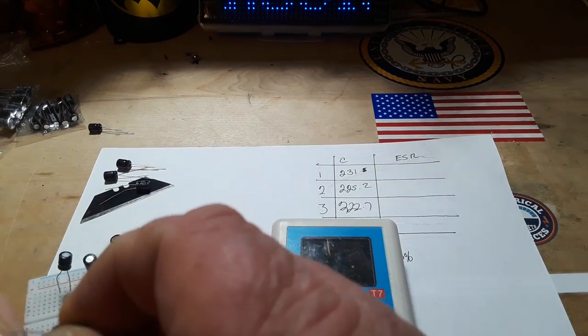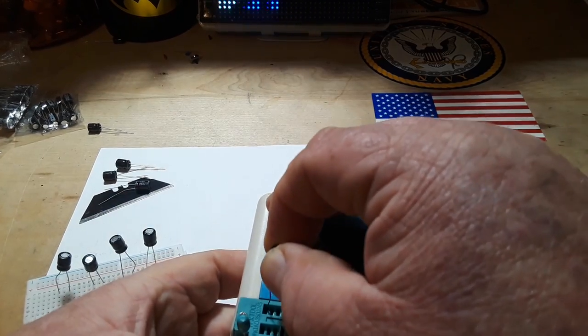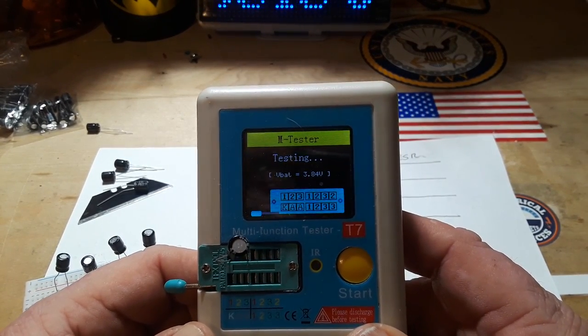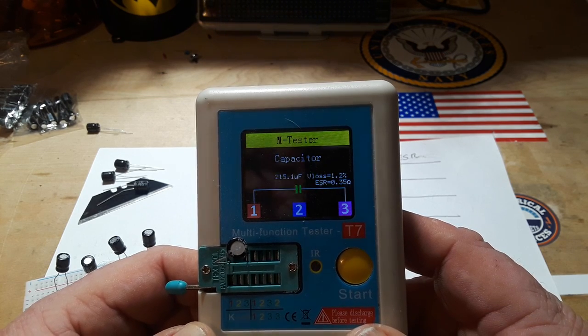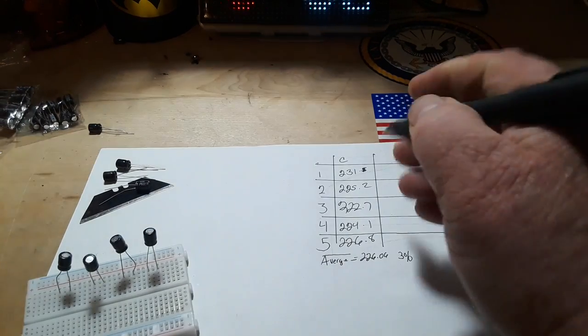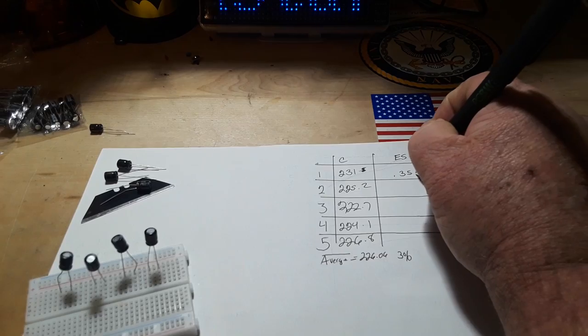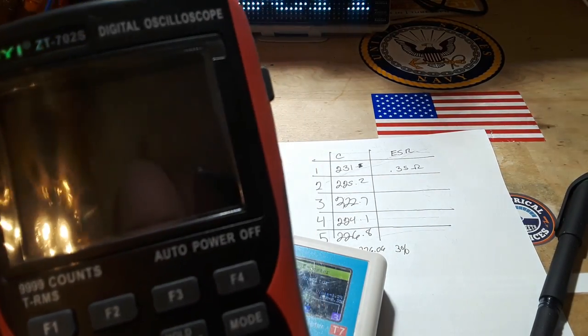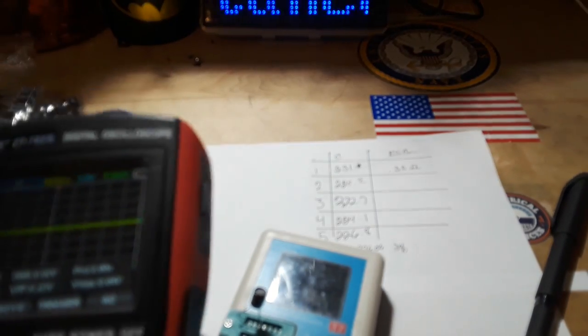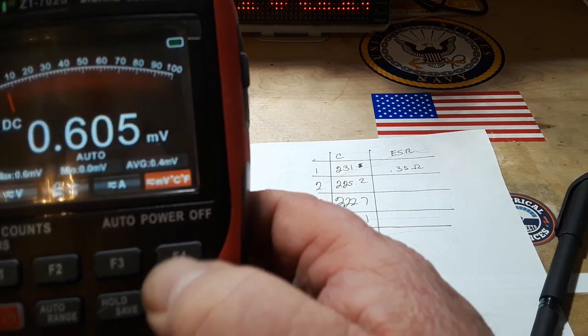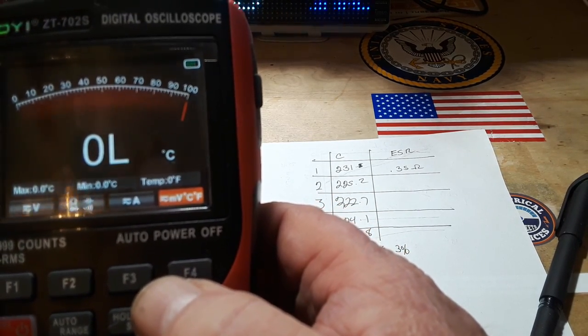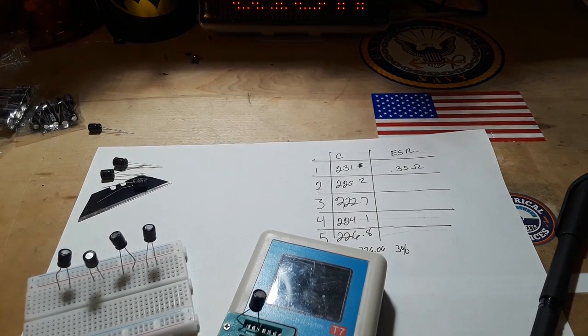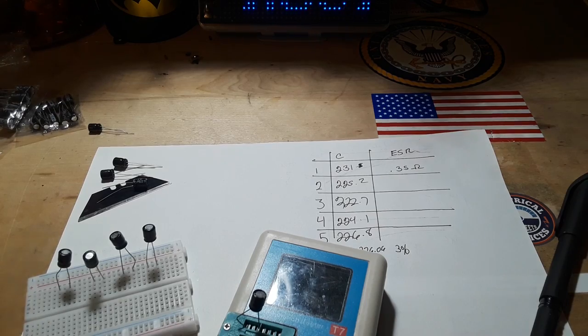Number one, you're up first. Looking good. Now I'm not using any leads on these because leads induce capacitance that could also affect the ESR. So this ESR is 0.35 ohm. Let's have a quick look here at what our temperature is. It's about 68 degrees. That's what I keep my air at.